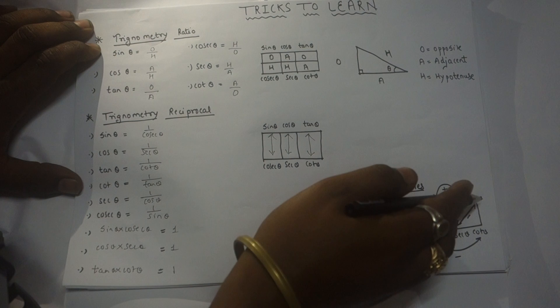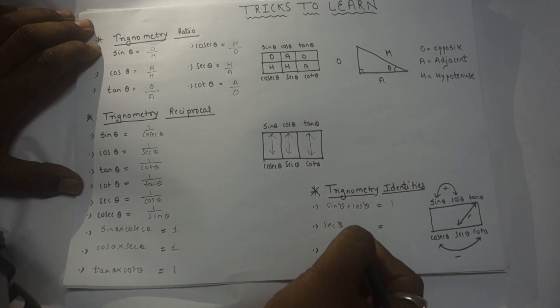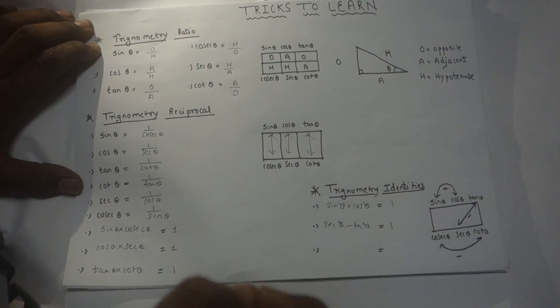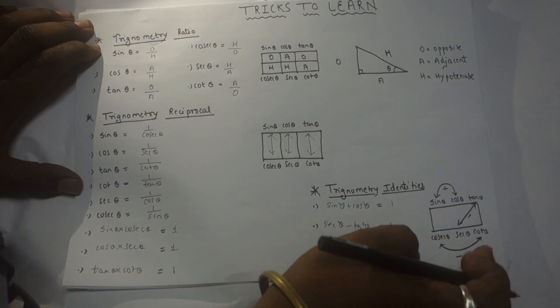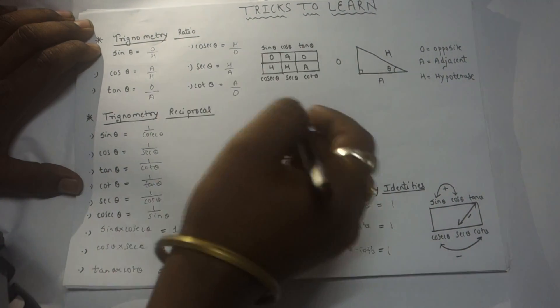The relation between tan and sec: sec squared theta minus tan squared theta equals one — they are far apart, so we write minus. Similarly, between cosec and cot, they are far apart, so: cosec squared theta minus cot squared theta equals one.